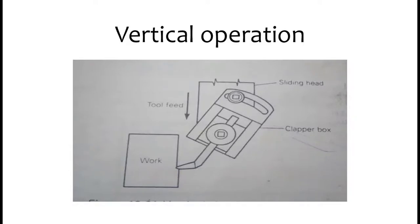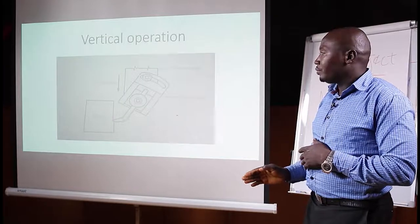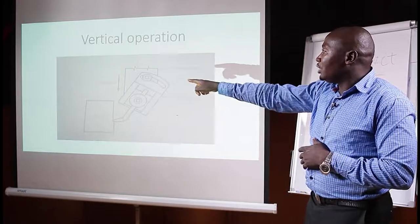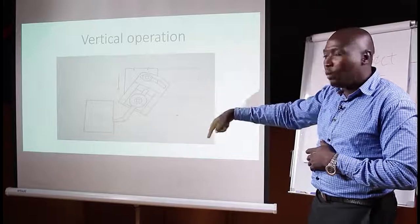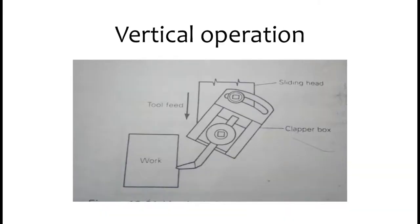For the vertical operation, the sliding head and clapper box are not in a vertical position — the machine is cutting the workpiece at a right angle, and the tool feed direction is going downward. The clapper box in this case is tilted or swiveled to an angle, as you can see on the screen, not in the upright position.